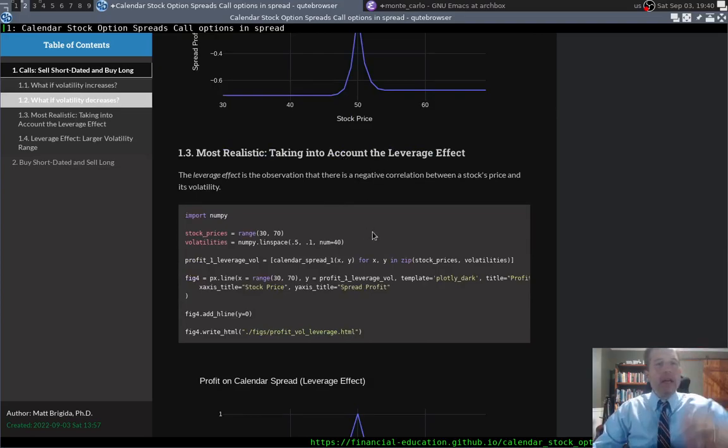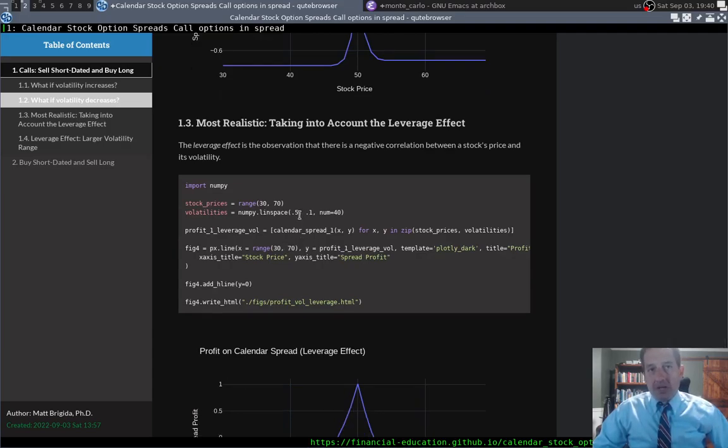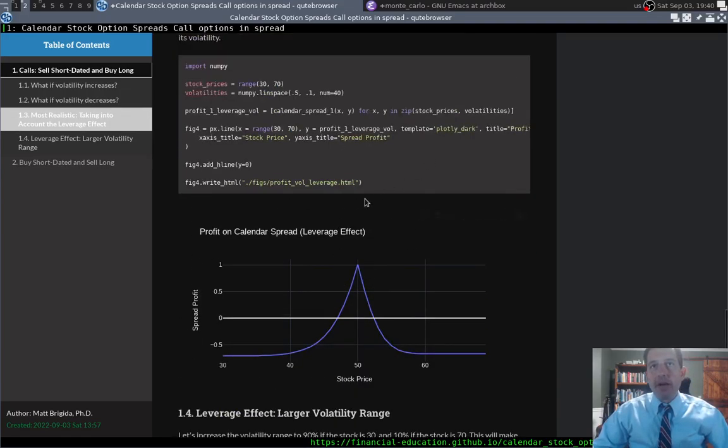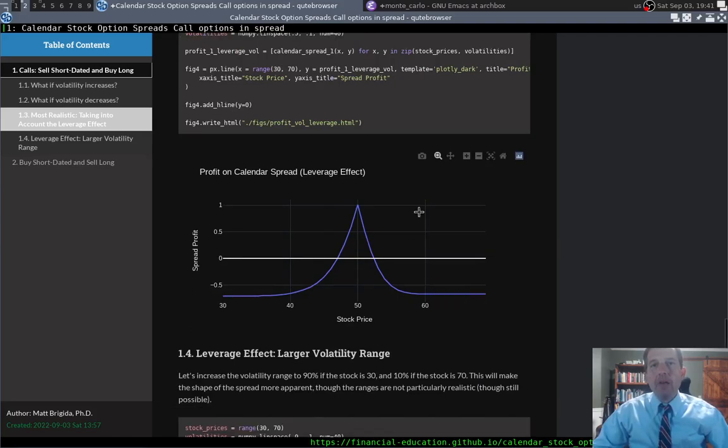So to make this most realistic, what we should do is take into account this leverage effect. So what I do here is I say, okay, well, if the stock falls to 30%, let's say that the volatility is 50. And if the stock goes up, this was 49% to 70%, let's say the volatility is 10%. So we calculate the P&L of this spread that way. So again, the stock goes down, volatility goes up, stock goes up, volatility goes down. And what you can start to see is this asymmetry.